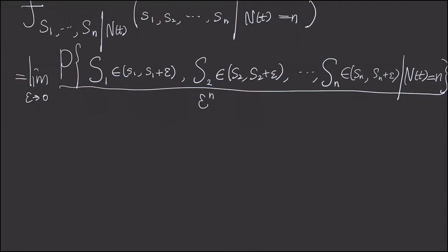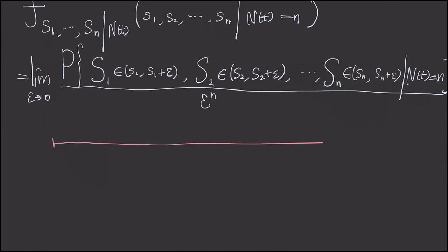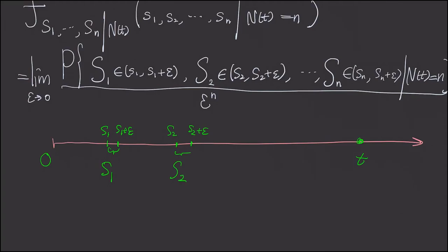To compute this event given this condition, let me draw a figure on the time axis. If this is t and we start our clock at 0, the event simply means: our first event happens in the interval [s1, s1+ε], our second event S2 happens in [s2, s2+ε], and so on, with our nth event Sn happening in the interval [sn, sn+ε]. We want to compute the probability of this event.